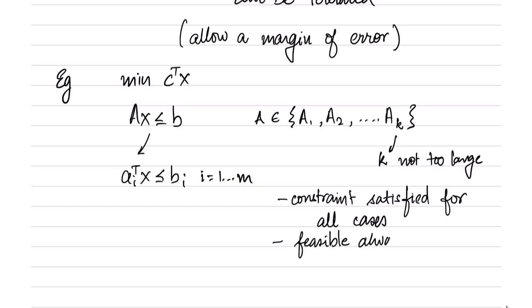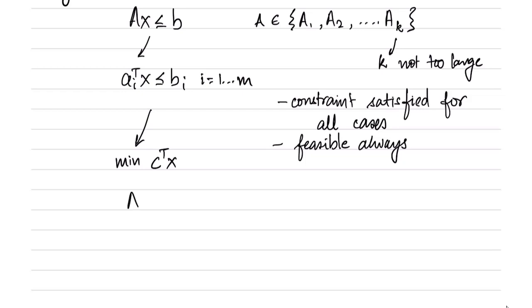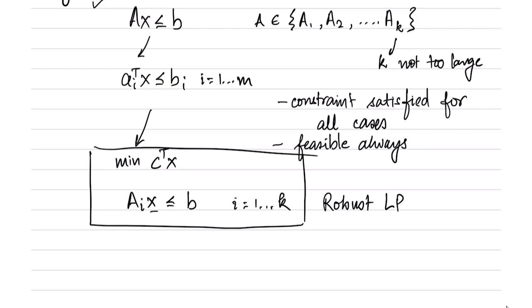Therefore we can formulate the robust version of this linear programming problem as minimize C transpose X subject to constraint A_i X less than equal to B for i equal to 1 to K. This becomes our robust linear program. We have started with a regular linear program and now we have the robust linear program which allows us to use any A. Note that whatever A value I use, the constraint will always be satisfied because the constraint is satisfied with respect to all the A values. When we are minimizing C transpose X, we would be minimizing while ensuring that the constraint holds for all A.